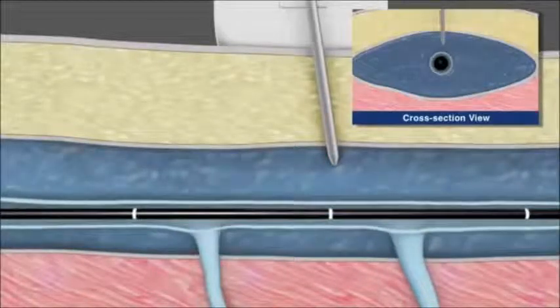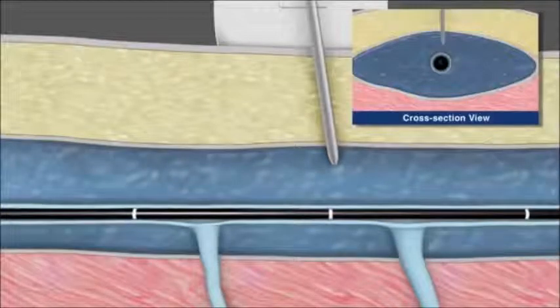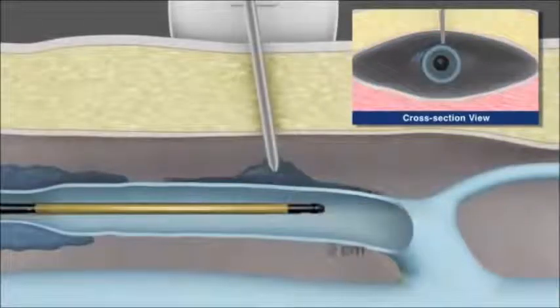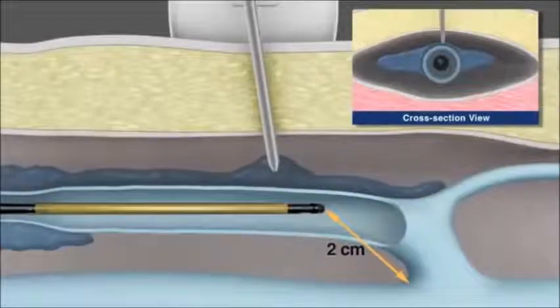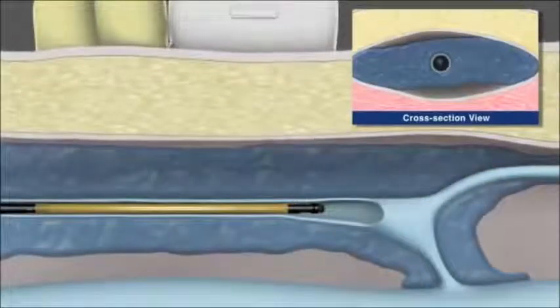The catheter tip position is confirmed and adjusted as needed to ensure the tip is two centimeters from SFJ. Once in place, infiltration of the junction can proceed. External compression is applied to ensure good contact between the catheter and the vein wall.